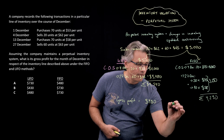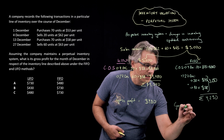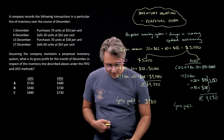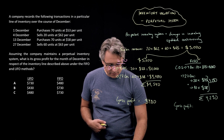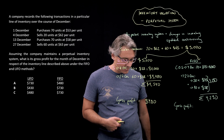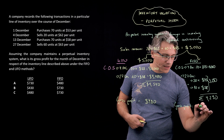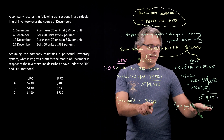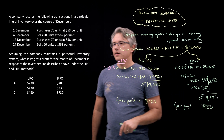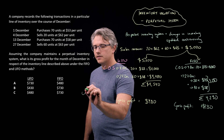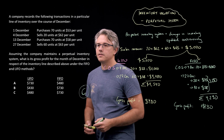Therefore, gross profit under FIFO would be the same sales revenue of $5,020 minus $4,290, giving a result of $730. Our answers are $480 under LIFO and $730 under FIFO, which is in line with answer C. So answer C provides the correct solution.